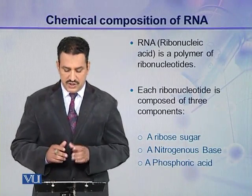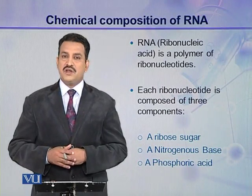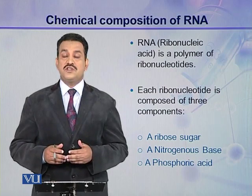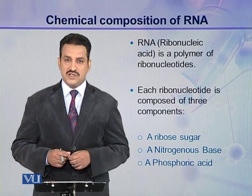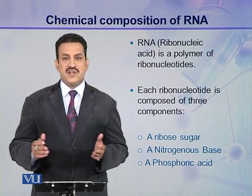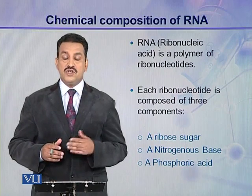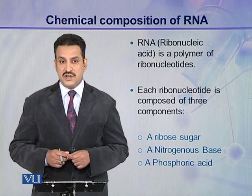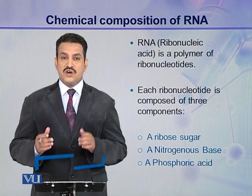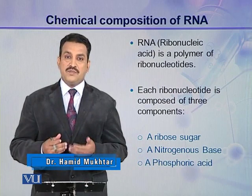Dear students, in this module, I am going to discuss the chemical composition of RNA. RNA, or ribonucleic acids, is another major type of nucleic acid present in the cells. It is also a polymeric compound just like DNA. As you know, DNA is made up of deoxyribonucleotides, but RNA is made up of ribonucleotides.